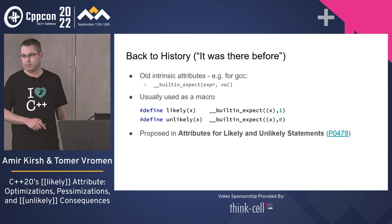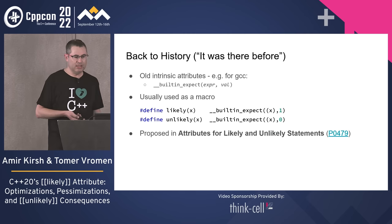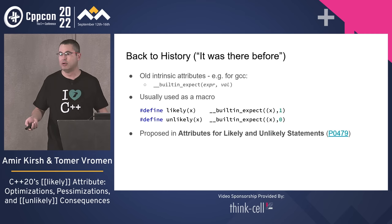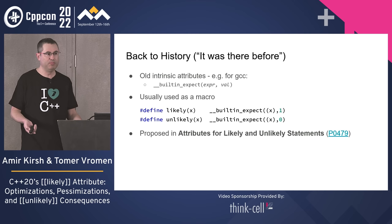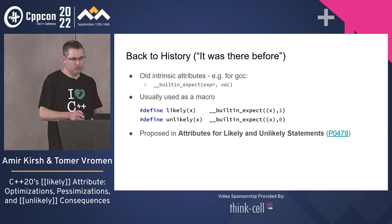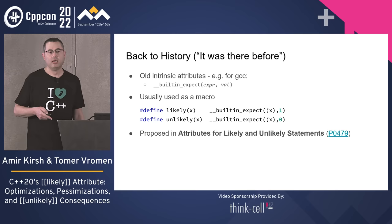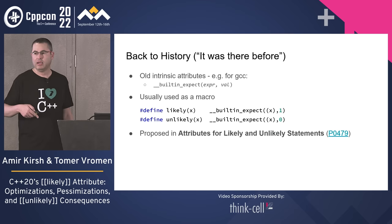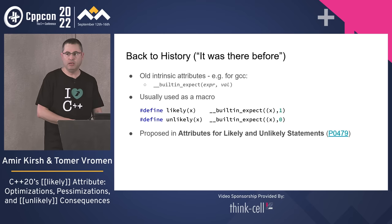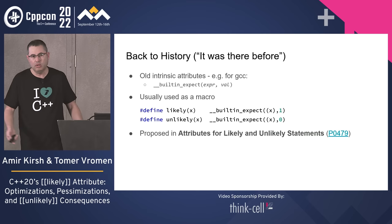Back to history: there were similar built-in attributes in GCC, so this is not something new. But once it is in the language, people would try to use it more — that's why it's important to understand how it can help you, or maybe in some cases hurt you. In GCC's built-in attributes you could specify the percentage of likelihood, like 90% or 2%. In the standard language attributes you just say likely or unlikely, which makes sense since in many cases you can't actually measure the percentage.